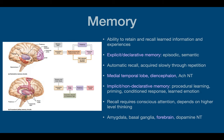Memory is the ability to retain and recall learned information or experience. There can be explicit or declarative memory, which is episodic or semantic. This memory is automatic recall — you don't have to think, it just comes back to you. It's acquired slowly through repetition, like reading, where you're able to recognize and recall words but had to practice quite a bit before reading and writing fluently. The medial temporal lobe and diencephalon are involved in explicit declarative memory, using acetylcholine as the neurotransmitter.